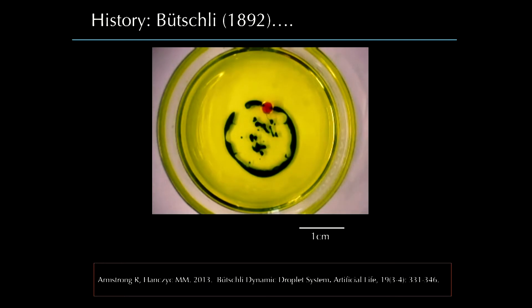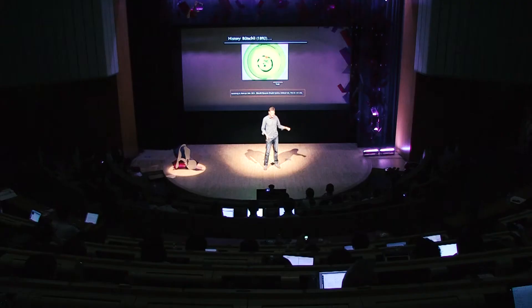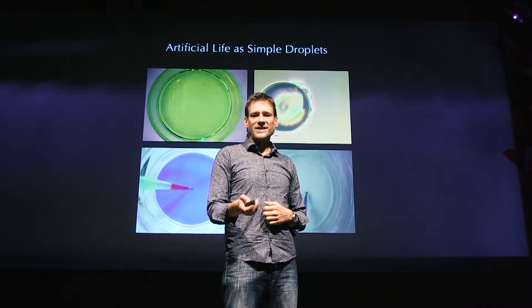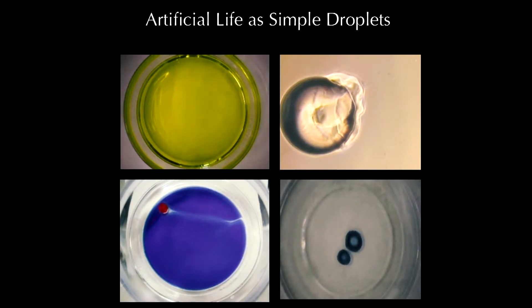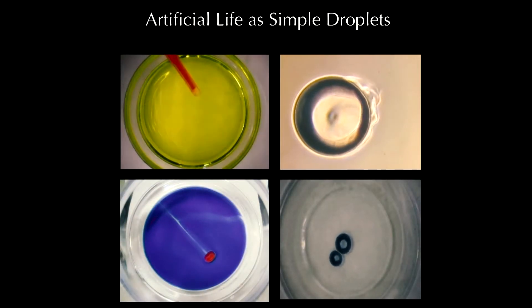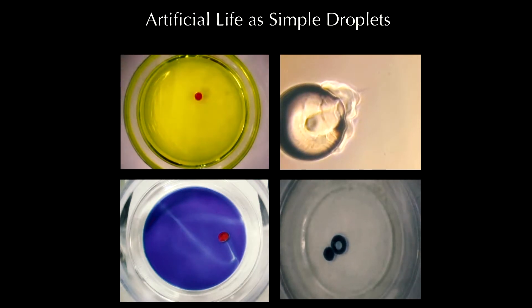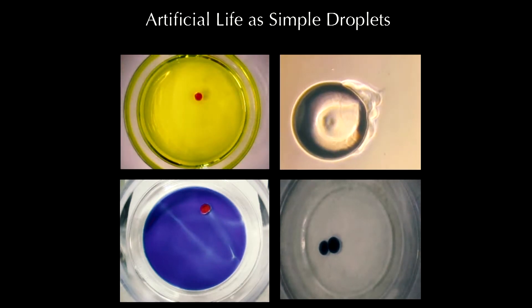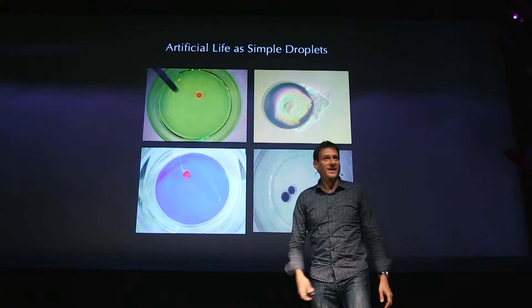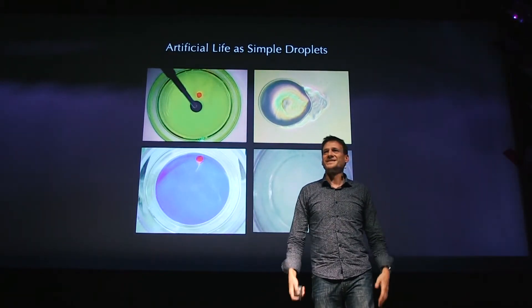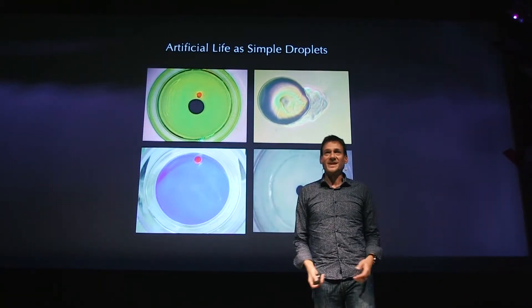The droplet is moving around, spreading, breaking apart into smaller droplets. Those smaller droplets have some sort of interaction with each other. This is what Bushley was interested in — how you can turn a non-living system into something that is behaving like a real organism. In our lab we study these dynamic processes, taking droplets that normally don't do anything and basically animating them through chemistry.